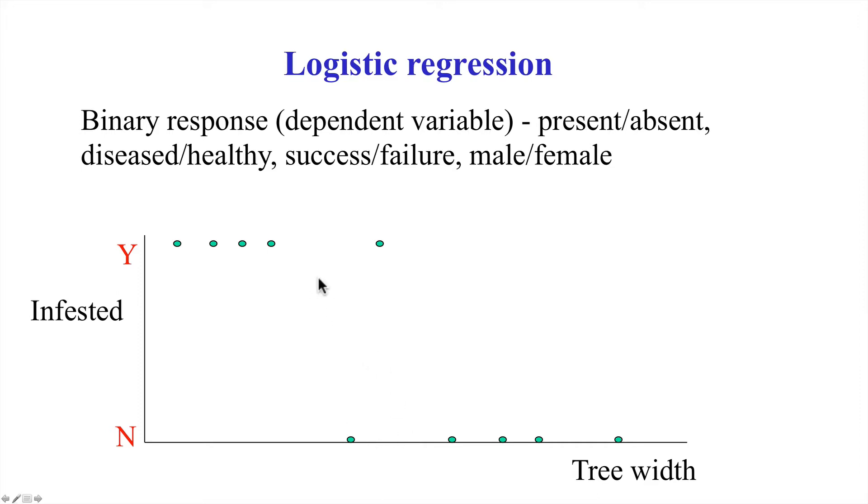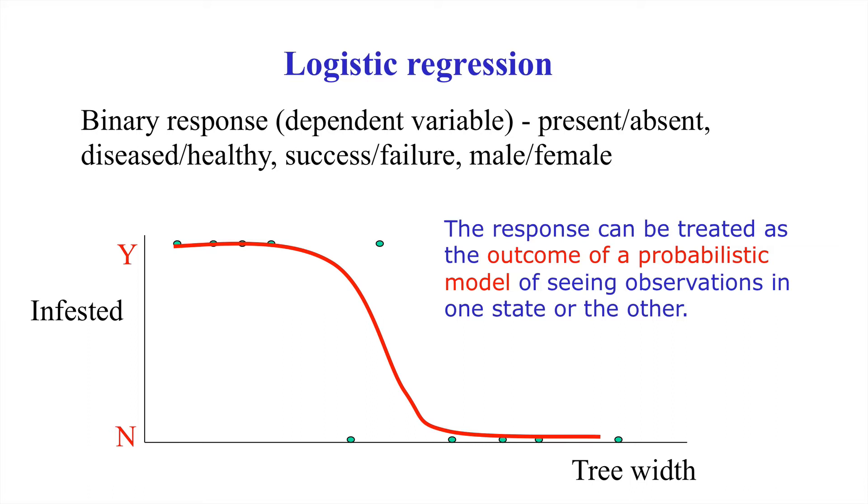For example, under what conditions will a tree be much more likely to be not infested than infested? The key method for understanding the conditions under which that switch might occur is the binary logistic regression. In binary logistic regressions what we do is we assume that the response variable we are measuring is the outcome of a probabilistic model whose parameters are the various predictor variables, in this case the tree width. In effect what we are doing is really fitting some form of sigmoidal model to our data which is the probabilistic model that generates those data.